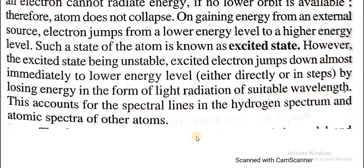So we have listed the main postulates of Bohr's atomic theory. When the electron loses energy jumping from higher to lower energy levels, it emits light radiation of suitable wavelength. This accounts for the spectral lines in the hydrogen spectrum and the atomic spectra of other atoms — this is the reason why we find spectral lines in the hydrogen spectrum.